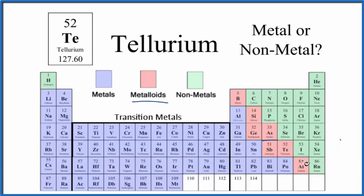In between, we have the metalloids, right down here. When we look for tellurium, TE, we find it right here. So tellurium is considered a metalloid — it's between the metals and the nonmetals, and it'll have properties of both metals and nonmetals.